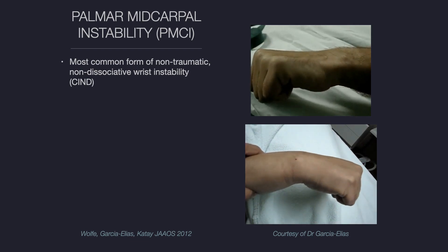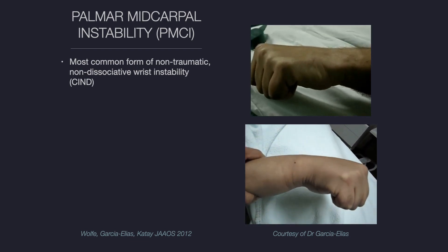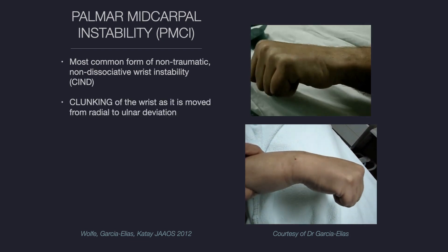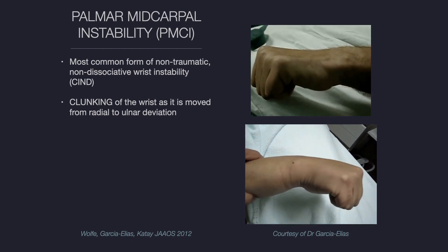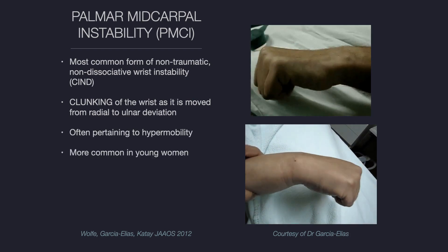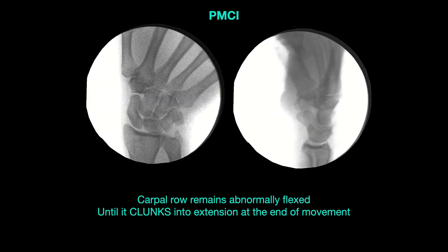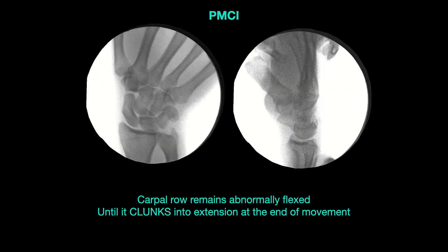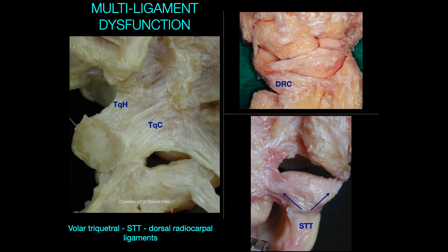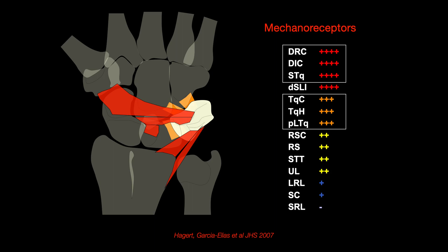Palmar mid-carpal instability is the most common form of non-traumatic, non-dissociative wrist instability, where clunking of the wrist is noted as it moves from radial to ulnar deviation. It often pertains to hypermobility and is more commonly seen in young women. Using dynamic fluoroscopy, the carpal row can be seen to remain abnormally flexed until it clunks into extension at end range of motion. Numerous ligaments are involved — the volar triquetrohamate, the STT, and the dorsal radiocarpal ligaments — all found to be richly innervated with mechanoreceptors, indicating an important proprioceptive function.